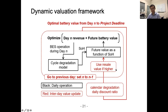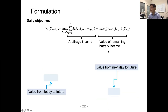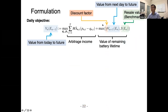The daily objective is to maximize arbitrage income plus the remaining value of the battery. The value function from today to the project deadline equals the value from tomorrow to the future, discounted by a daily discount factor. If the benchmark resale value exceeds this term, we should sell the battery and terminate the project. There is a project deadline after which the battery project is assumed to be terminated.